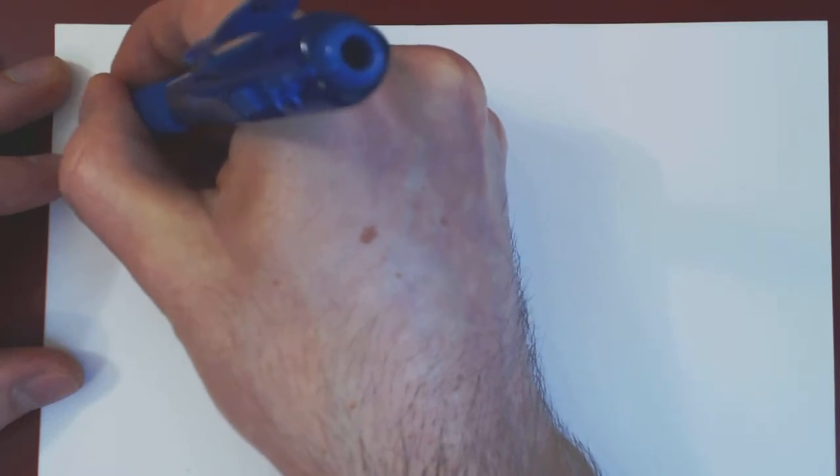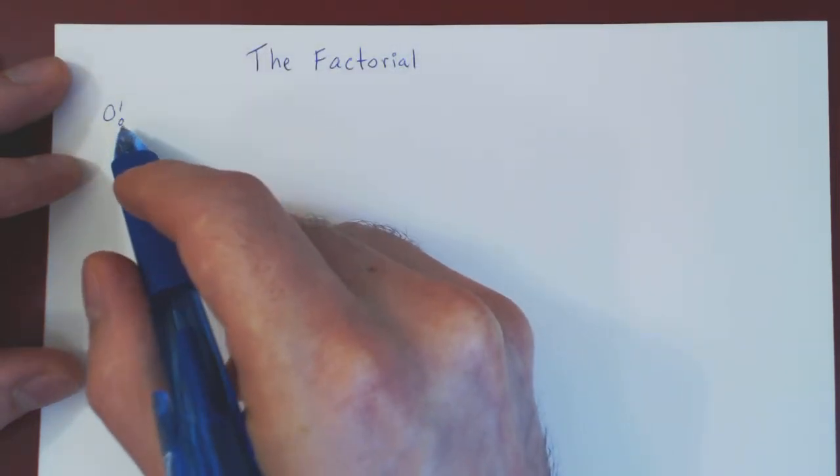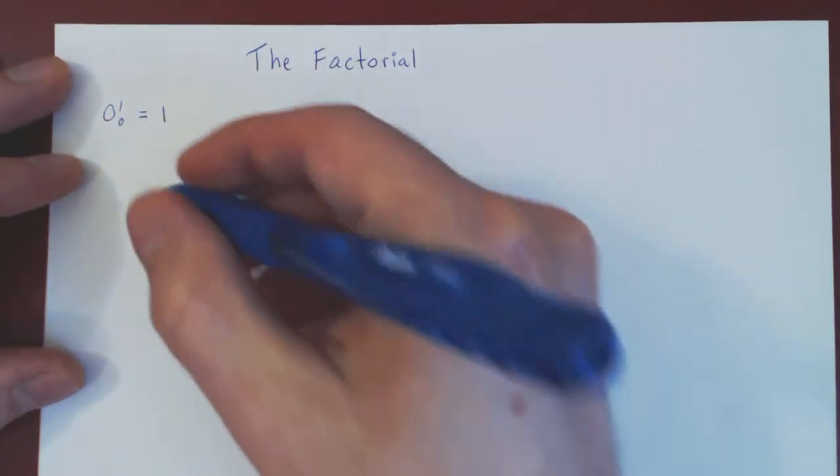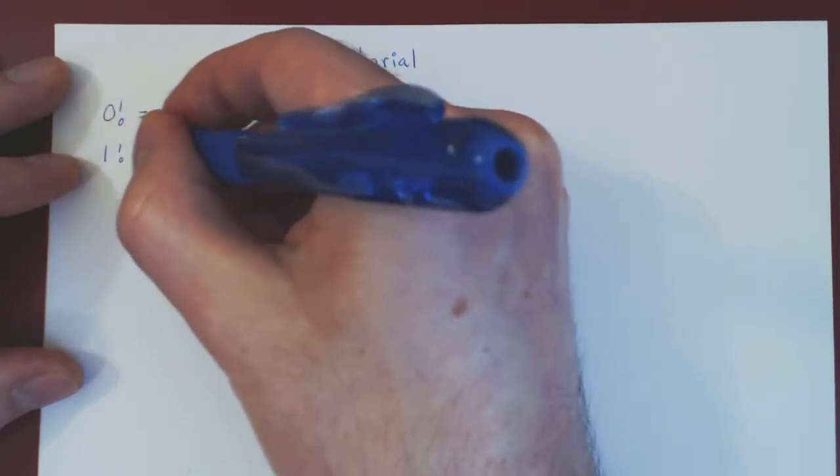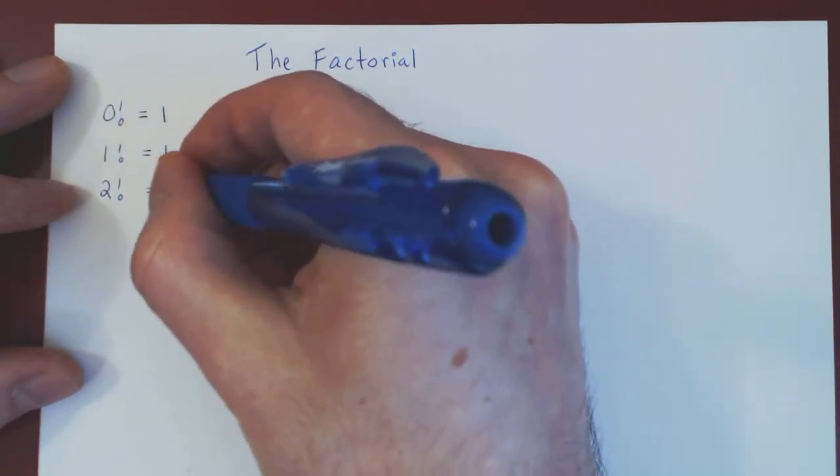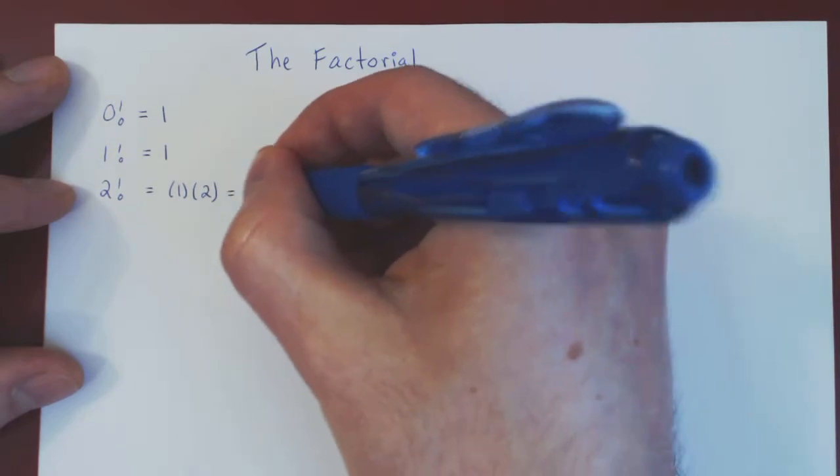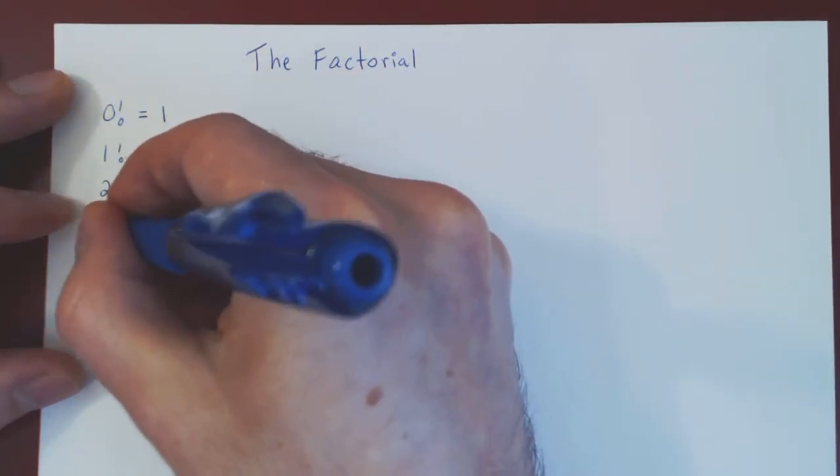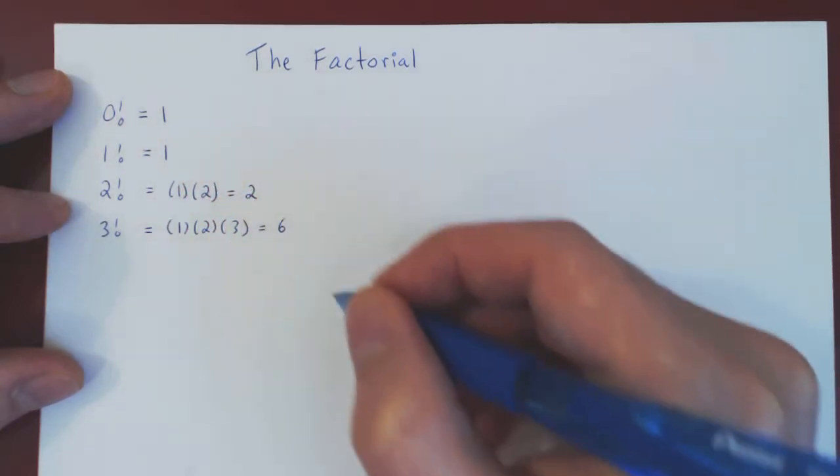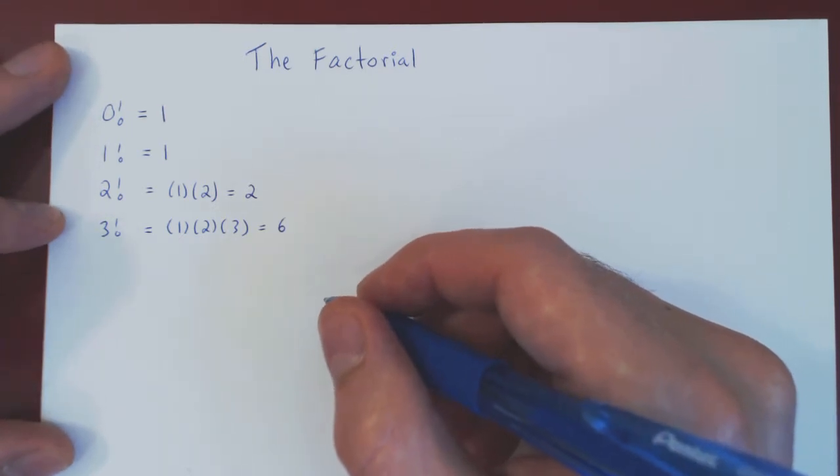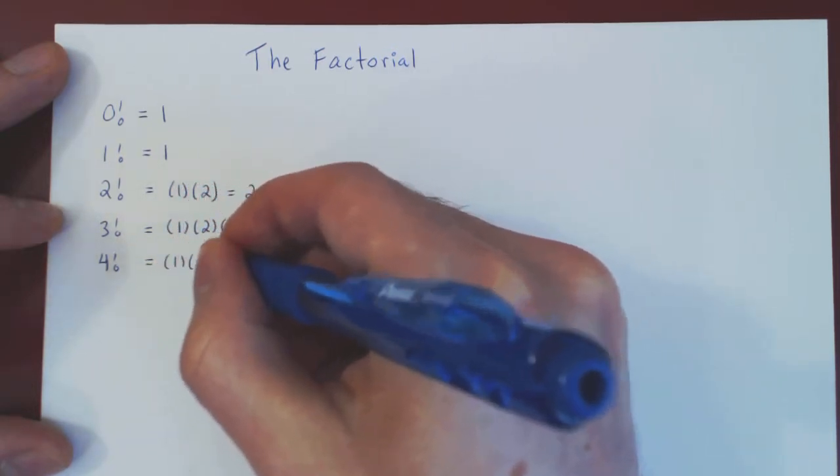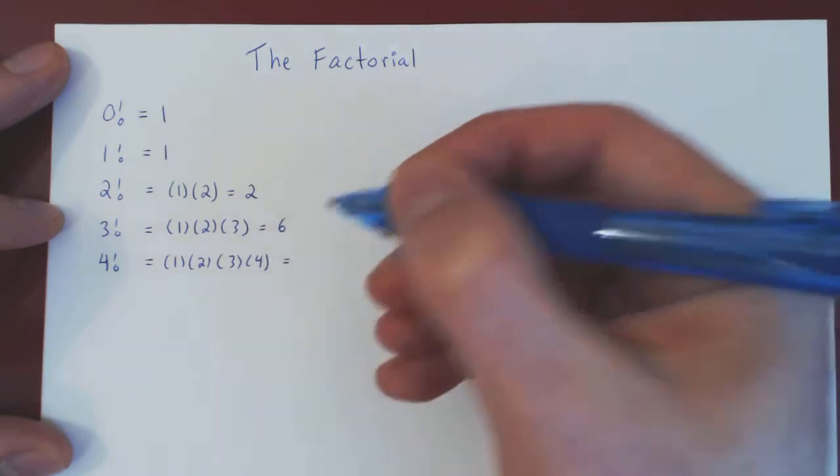So we have zero factorial. This reads zero factorial. This is defined to be 1. Then 1 factorial is also defined to be 1. 2 factorial is defined to be 1 times 2, which is 2. 3 factorial is defined to be 1 times 2 times 3, which is 6. And you can probably see where this is going now. 4 factorial is defined to be 1 times 2 times 3 times 4, which is 24.